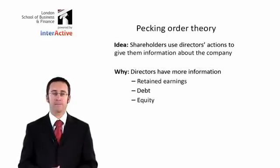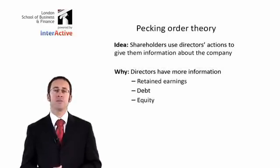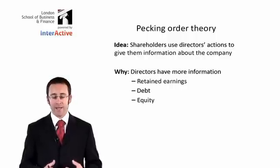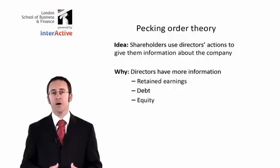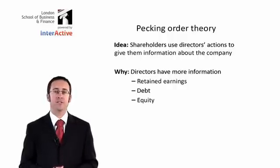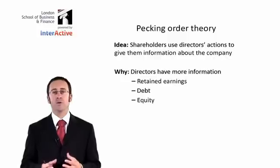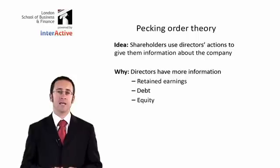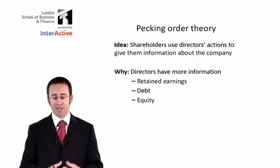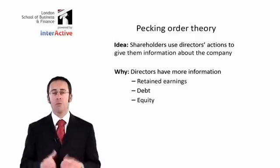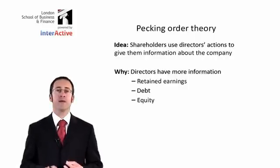Let's look first at pecking order theory. Pecking order theory is something that you may have touched upon previously when you looked at F9. The idea behind pecking order theory is that your shareholders are going to use your directors' actions to give them some information about the company — specifically, buying or selling shares — because the directors have more information about how they perceive the company is performing.